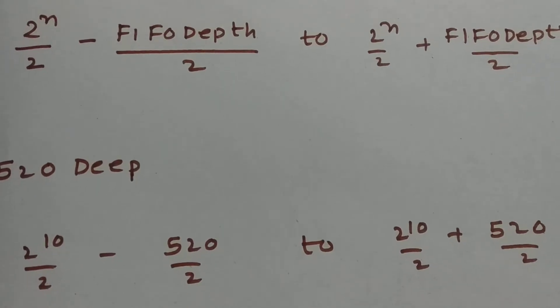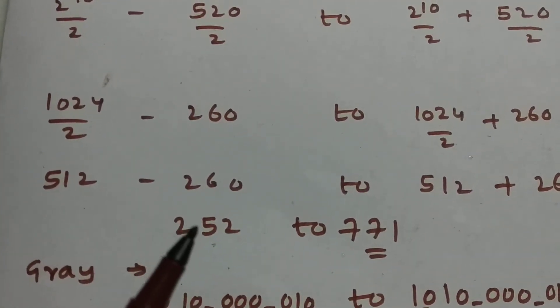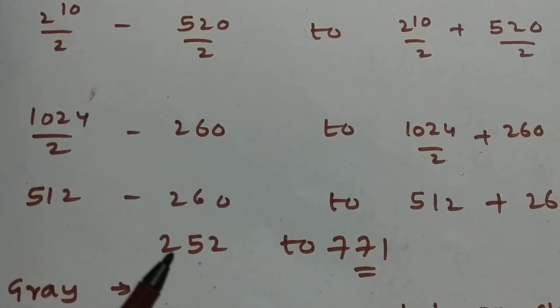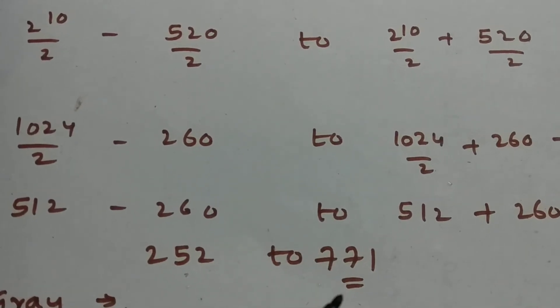So that's the reason we go with this formula while calculating the depth of the FIFO. So be aware. And don't forget to change the pointers starting from 252 rather than 0. We need to start from 252 rather than 0, and the last pointer last count will be 771.